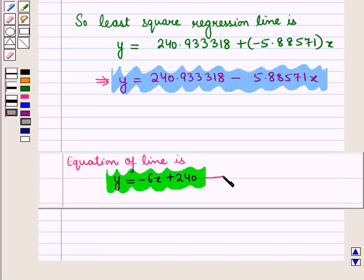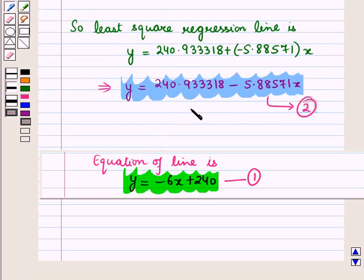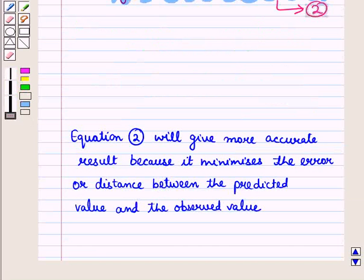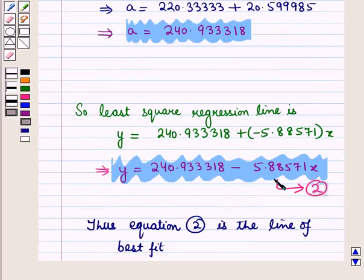Earlier we obtained the equation of the line (equation 1) as y = −6x + 230, and this regression line (equation 2) as y = 240.933318 − 5.88571x. On comparing the two equations, equation 2 gives more accurate results than equation 1 because it minimizes the error or distance between the predicted value and the observed value. Thus equation 2 is the line of best fit — the least squares regression line. So this is the solution of the given question. That's all for this session. Hope you all have enjoyed the session.